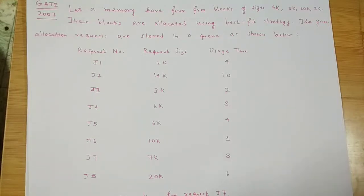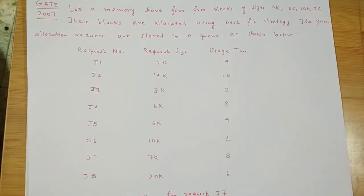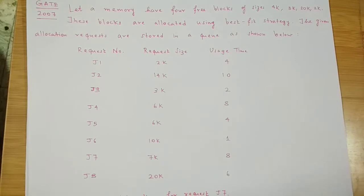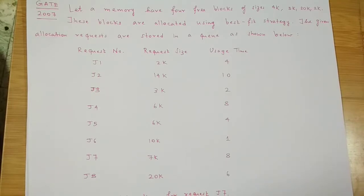Let's solve this question from GATE 2007. We have been given a number of requests, each with a request size and a time duration. Blocks are allocated using the best-fit strategy. Best fit means allocating a request to the block closest in size to it — if an exact match exists, great; otherwise, we pick the block that minimizes fragmentation.